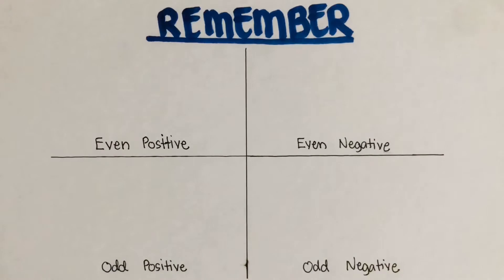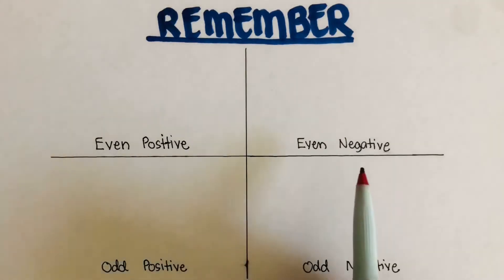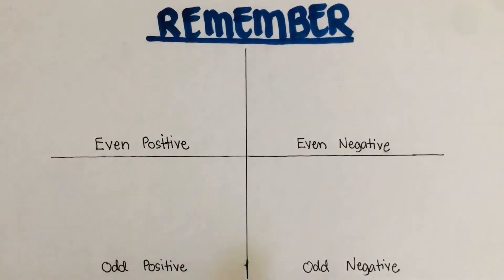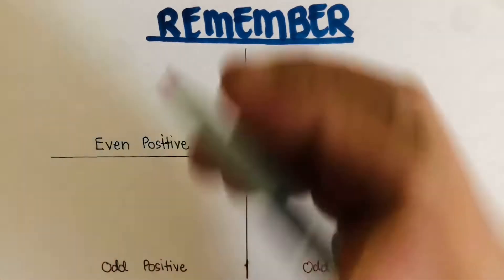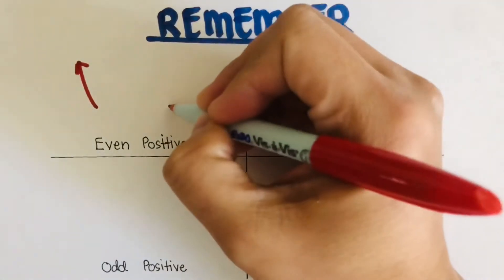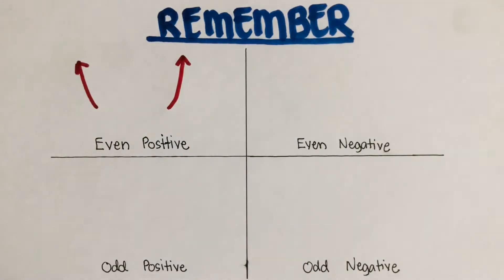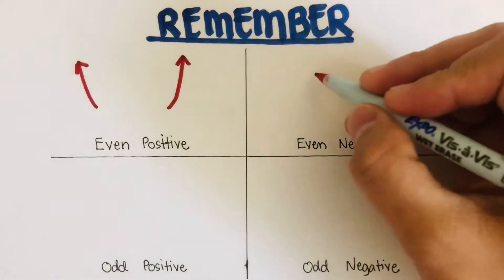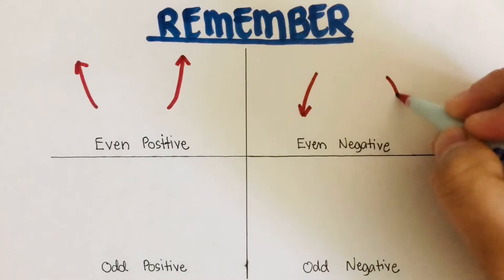The graph of every polynomial function can be classified into four types: even positive, even negative, odd positive, and odd negative. A graph is even positive if both the left end and the right end are directed upward. A graph is even negative if the left end is directed downward and the right end is directed downward.